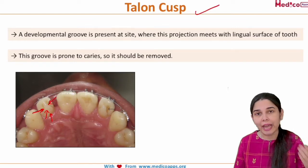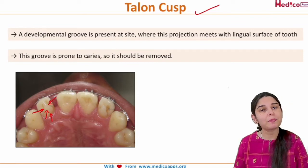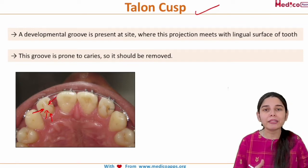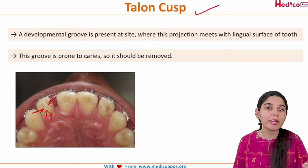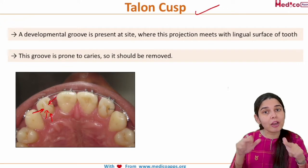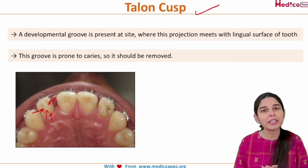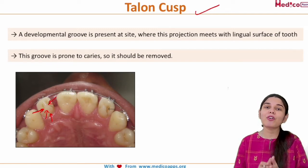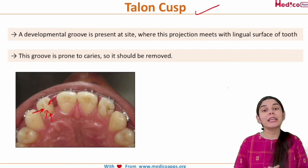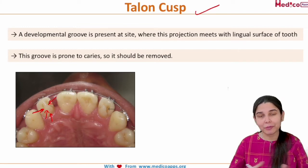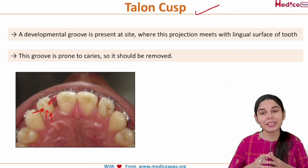To summarize, Talon's Cusp is a rare developmental anomaly present in the permanent maxillary and mandibular incisors, which protrudes lingually from the cingulum area. Most commonly it is seen in the maxillary lateral incisor, followed by the maxillary central incisor.